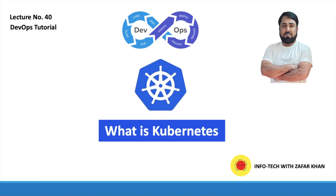The open source project is hosted by the Cloud Native Computing Foundation (CNCF). Orchestration is the automated configuring, coordinating, and managing of computer systems and software. Many tools exist to automate server configuration and management, including Kubernetes, Ansible, Puppet, Terraform, and AWS CloudFormation. In this video we will explore the basics of Kubernetes and how it works.